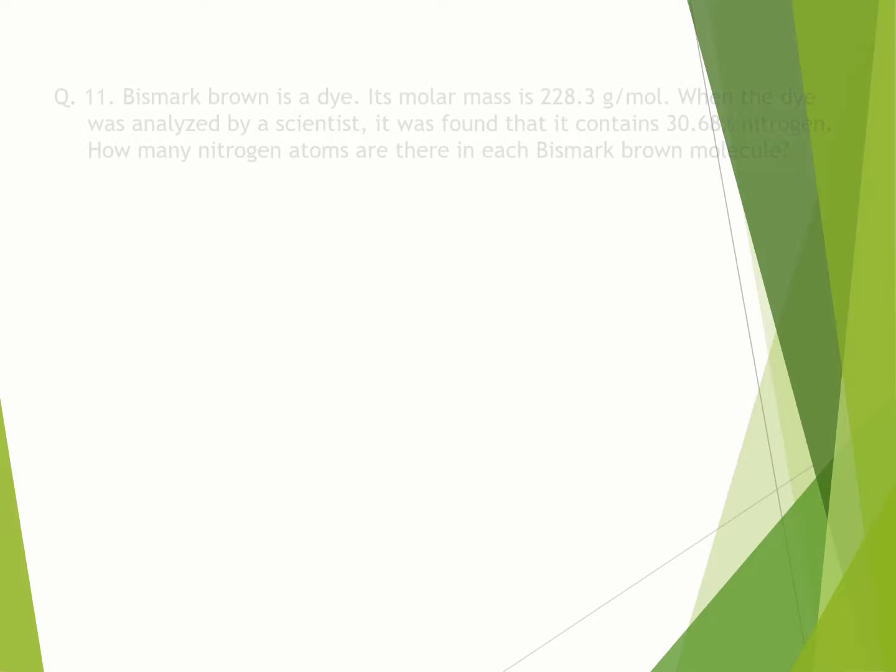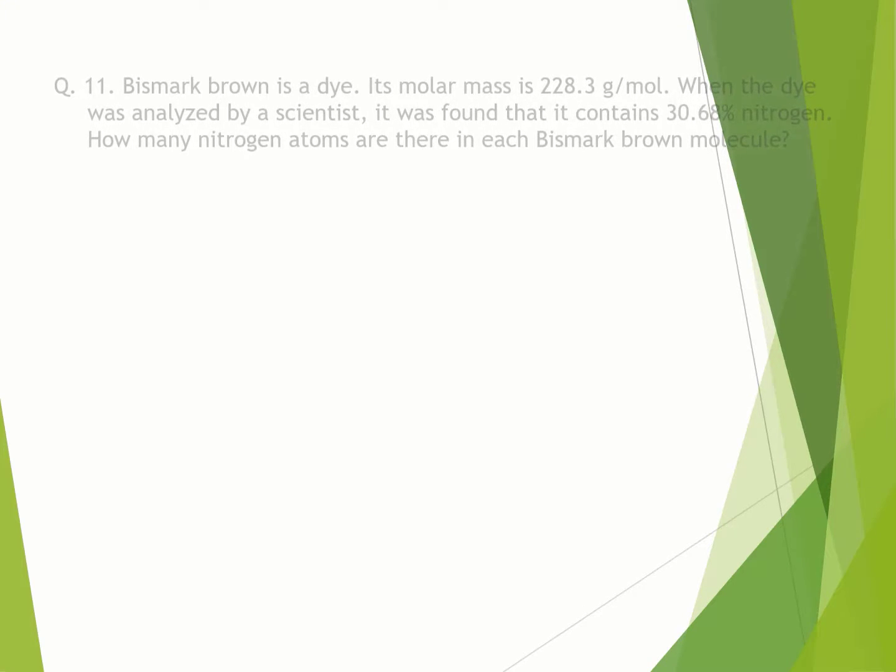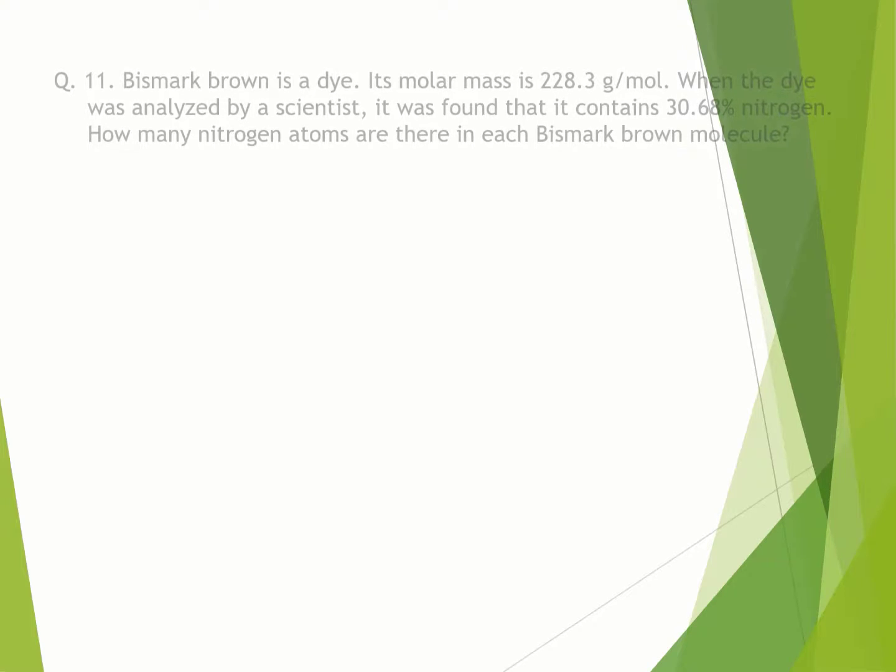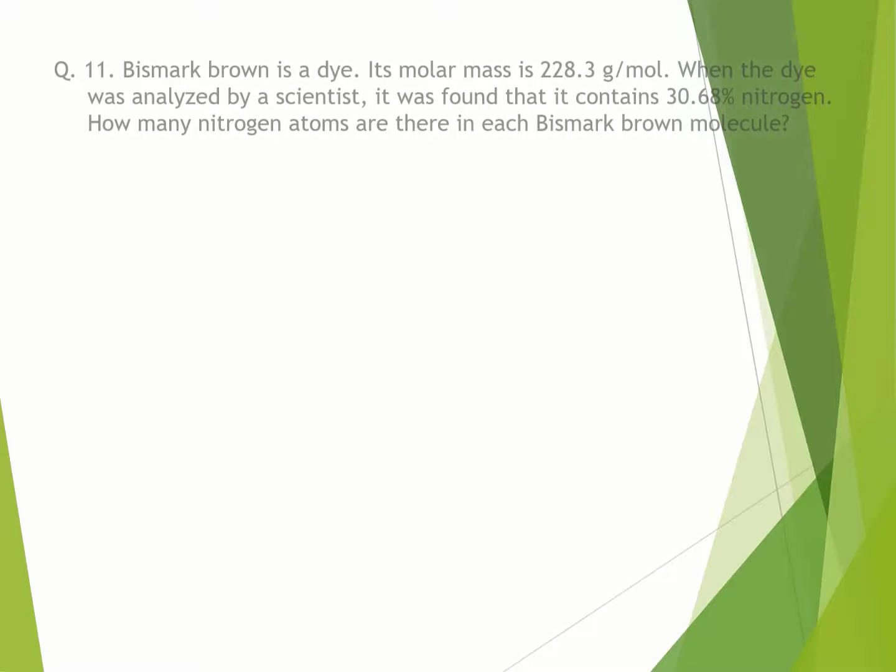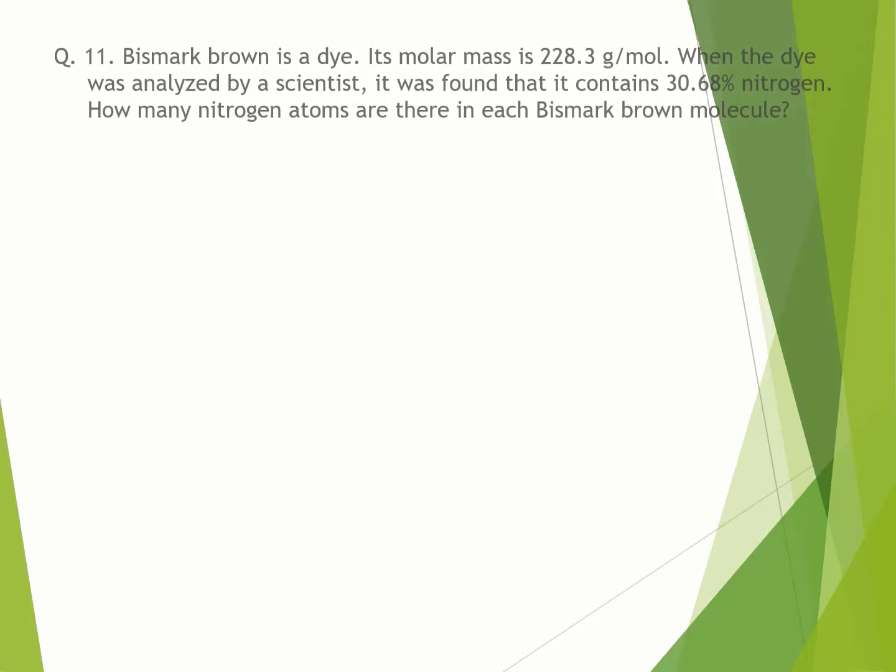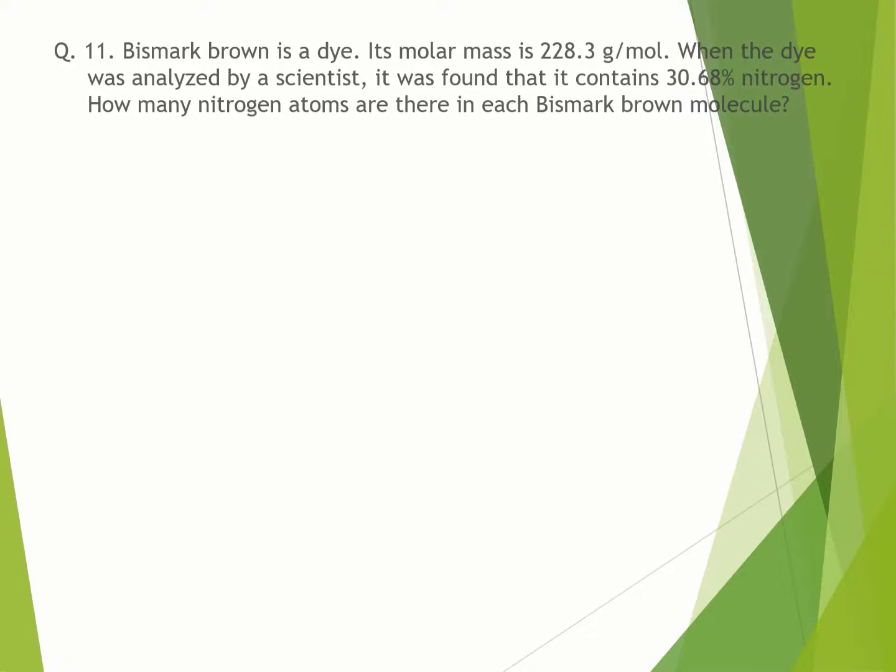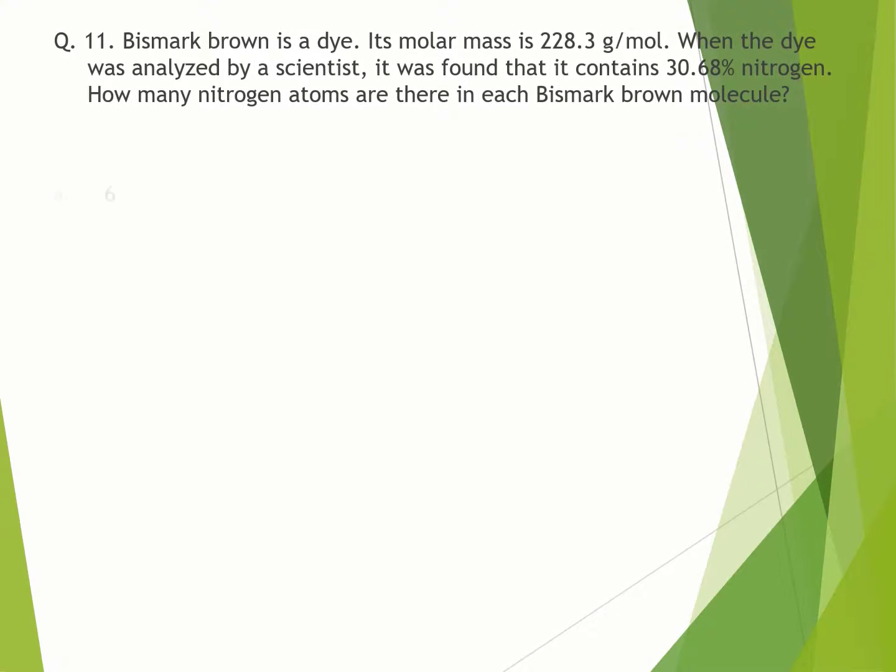Question number 11. Bismarck-Brown is a dye. Its molar mass is 228.3 grams per mole. When the dye was analyzed by a scientist, it was found that it contains 30.68% nitrogen. How many nitrogen atoms are there in each Bismarck-Brown molecule? A. Six. B. Five. C. Four. D. Three. Correct option is B.